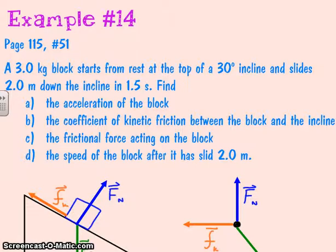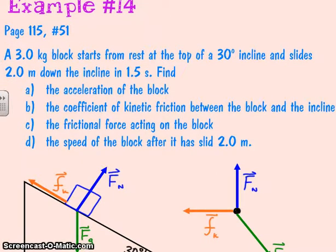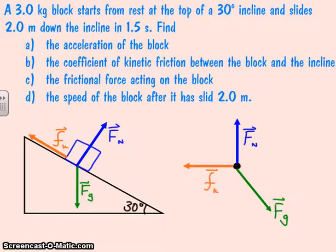We'll be finding several things about this block, but we'll start off with the acceleration. Before we do the acceleration, I drew a diagram and a free body diagram as well. On the left you'll see my force diagram, and I've drawn my ramp so that it is sliding down the ramp to the right. Normal force is always perpendicular to the surface, gravity always points straight down, and friction opposes motion. So since it is sliding down the incline, friction is up the incline.